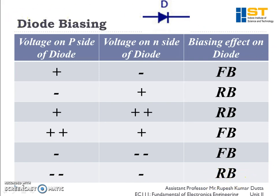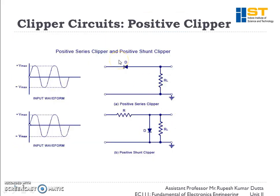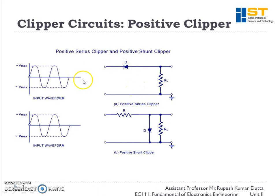Now let's start the clipper circuits. Clipper circuits can be divided into two types: series clippers and shunt clippers, each of which can be positive or negative. In a series clipper, the diode is in series with the supply. In a shunt clipper, the diode is in parallel with the supply.